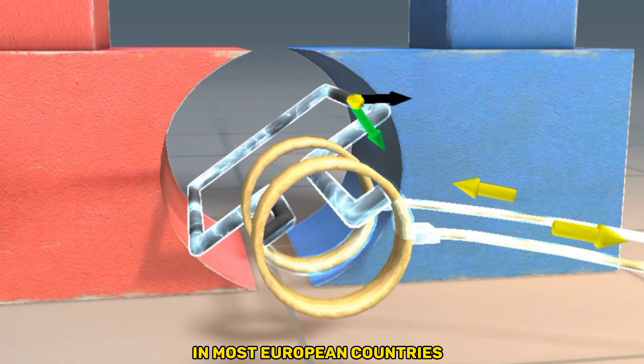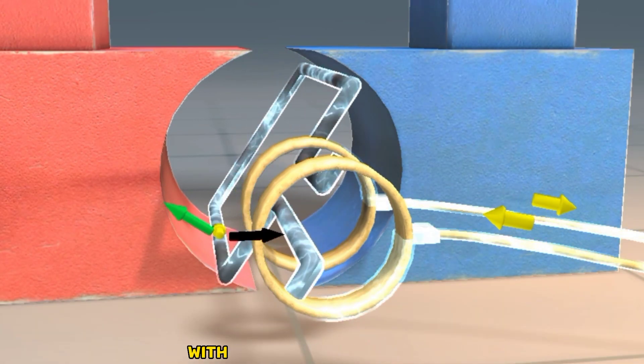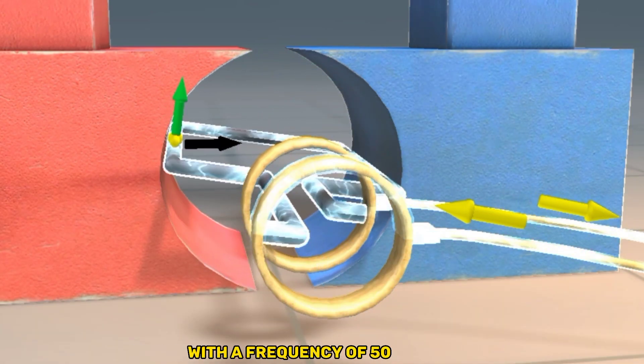In most European countries, the voltage of electric networks is 230 volts, with a frequency of 50 Hz.